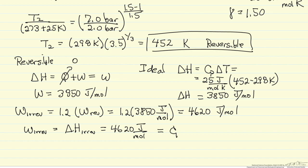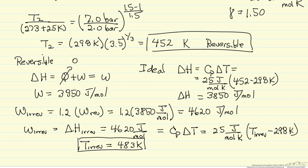Delta H, of course for ideal gas, is still Cp delta T. Let's put in numbers for this. Inlet temperature is still 298, same heat capacity, so we can calculate the temperature for the irreversible process, 483 Kelvin. You'll note that this is higher than the temperature for the reversible process. We had to put in more work. More work means a larger enthalpy increase, therefore a higher final temperature.